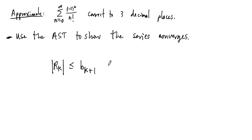So in this case, what do we want to know? Well, |R_k| < b_{k+1}, and we want to make sure that our sum is correct to within three decimal places. In other words, we want our error to be less than 0.001. If our error is less than this, then we should be correct to within three decimal places.